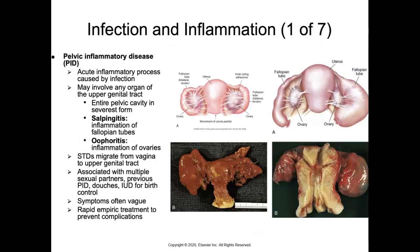Pelvic inflammatory disease (PID) is an acute inflammatory process caused by infection that may involve any organ of the upper genital tract or the entire pelvic cavity in its severest form. Conditions include salpingitis (inflammation of the fallopian tubes) and oophoritis (inflammation of the ovaries). Surgical images show total abdominal hysterectomy with bilateral salpingo-oophorectomy, unilateral pyosalpinx, and bilateral retort-shaped swollen fallopian tubes with ovarian adhesions.